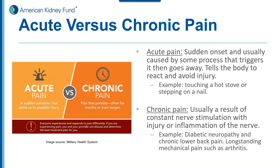There's acute pain and chronic pain. Acute pain happens immediately, is caused by a trigger, and goes away pretty quickly — it tells you to avoid injury, like the hot stove kind of pain. Chronic pain is where people really start to suffer a lot over many weeks at a time. It's a constant nerve stimulation or inflammation of the nerve that does not go away — like diabetic neuropathy, chronic back pain, or arthritis pain.